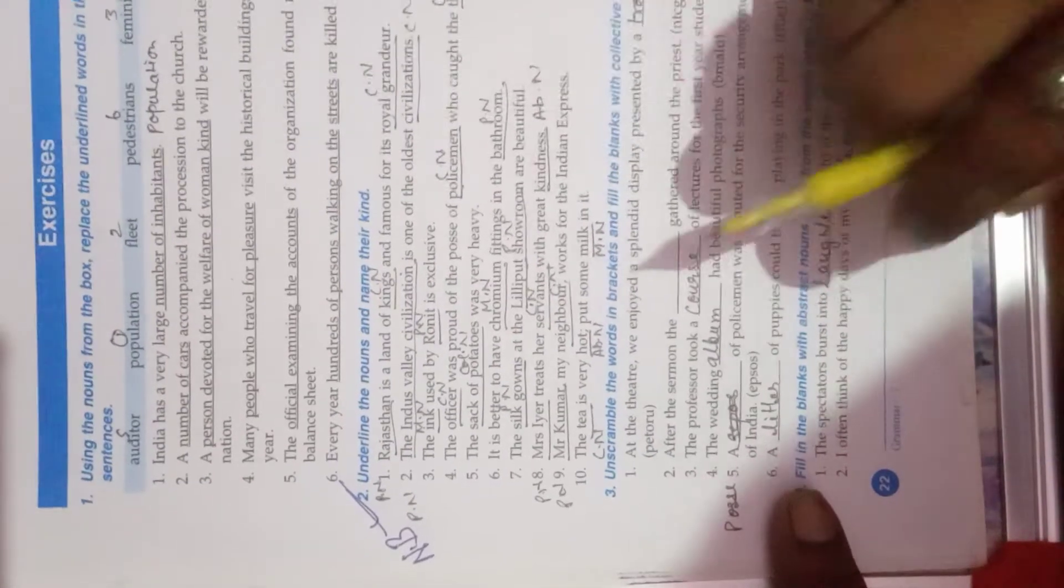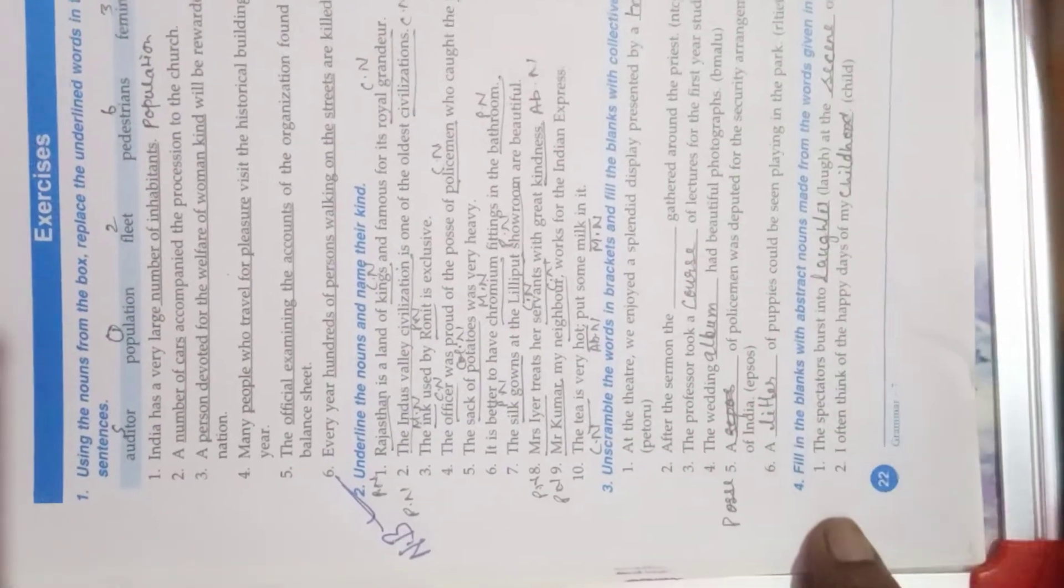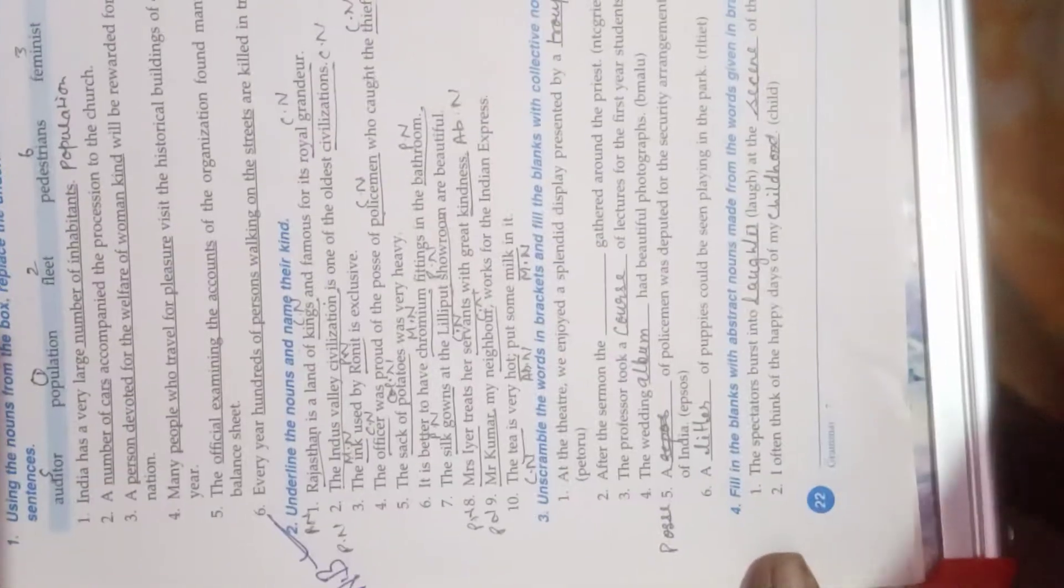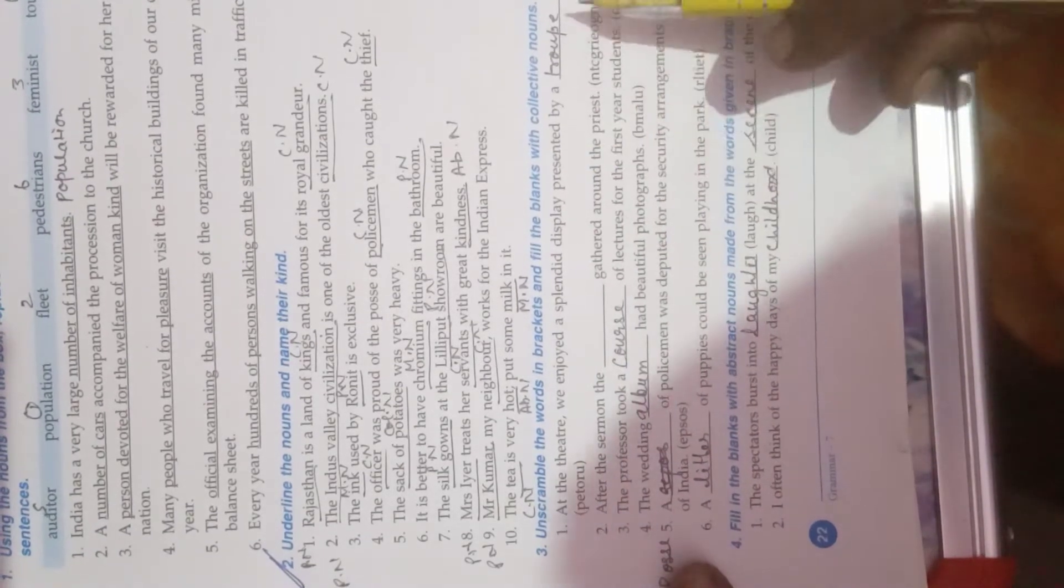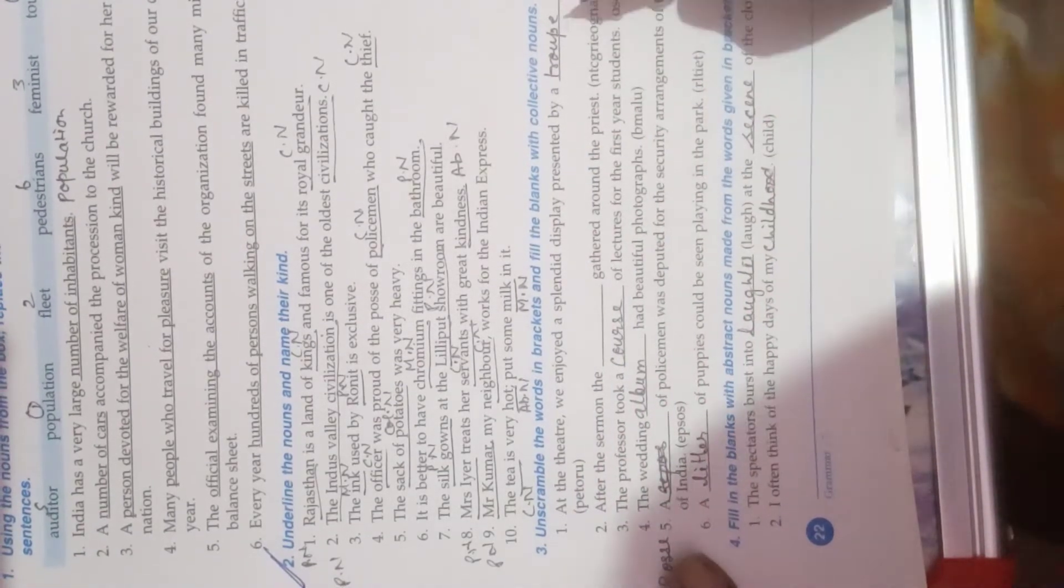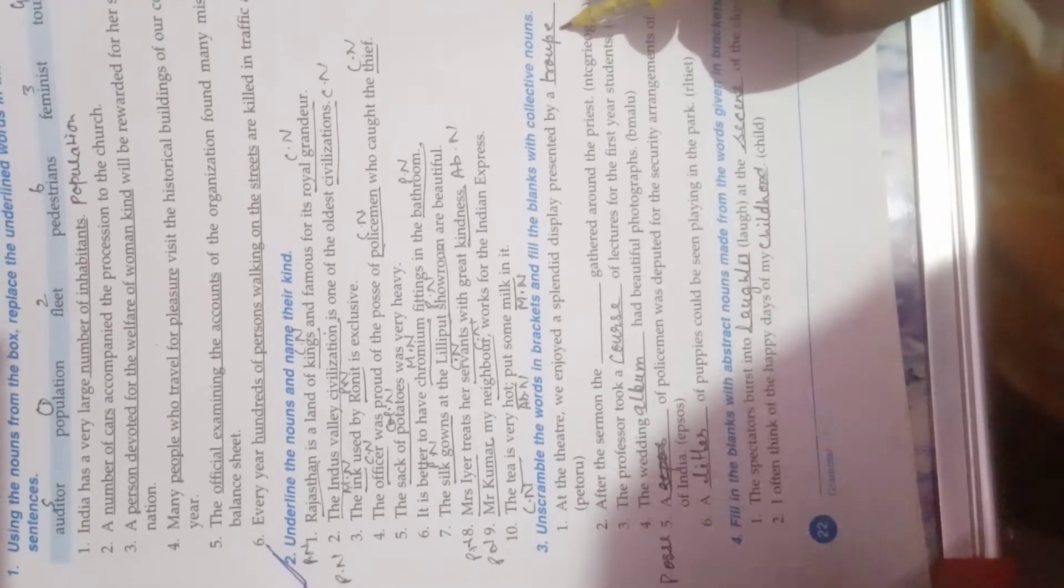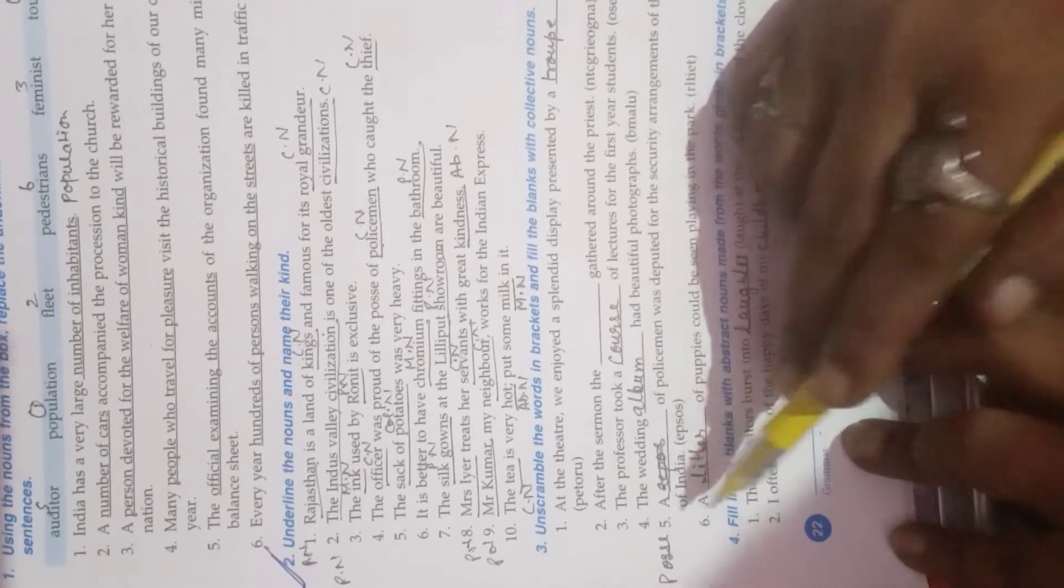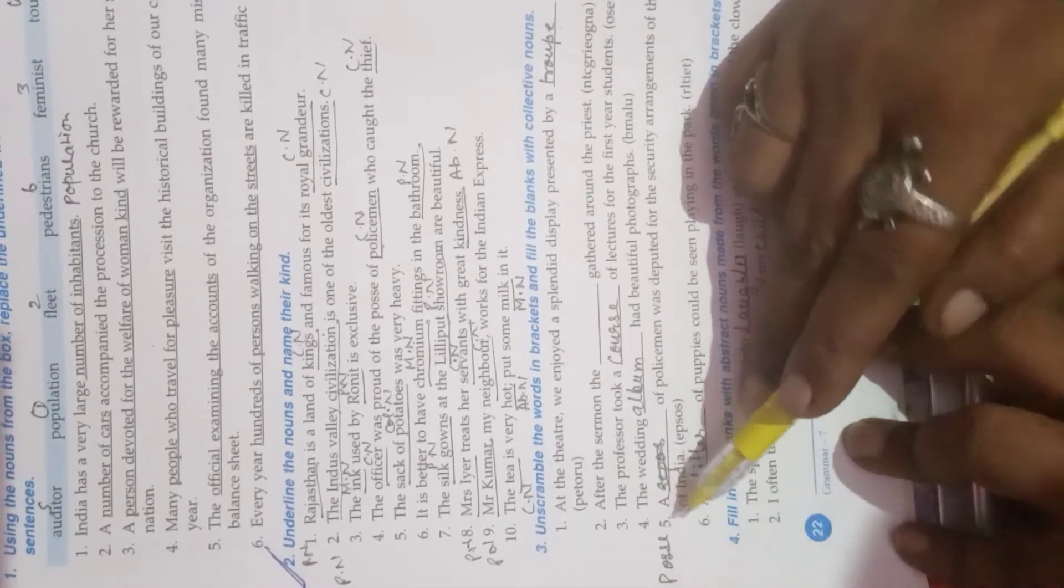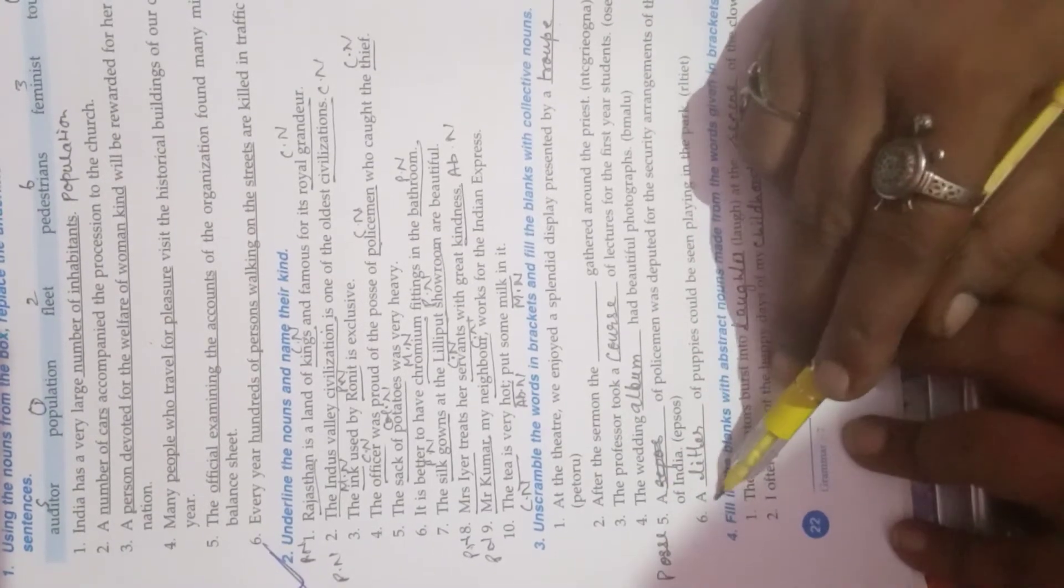Fill in the blanks. I think you can all see the answers in the video itself. Unscramble the words in the bracket, fill in the blanks with the collective noun. First one is proof. Third one is course. Fourth is album. Fifth is posse, P-O-S-S-E. Sixth is litter.